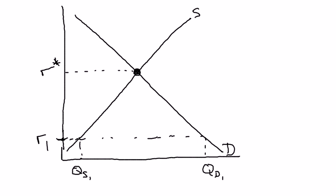You might ask yourself why the real interest rate is below the equilibrium. Don't worry about that right now — all I'm saying is, what if we start off there? What would happen? If we're in a situation where the real interest rate is below the equilibrium, then we're in a situation where quantity demanded exceeds quantity supplied.